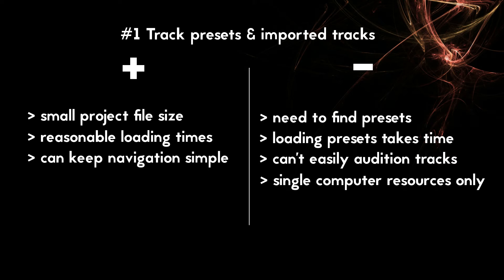First, let's look at pre-built and saved track presets. This approach involves first building a large template right inside Cubase using instrument tracks with one instrument per track. Once you've completed the template, all you have to do is save each of the tracks as a preset. You'll probably also want to save groups of tracks — for example, all the string sections from one specific library together.